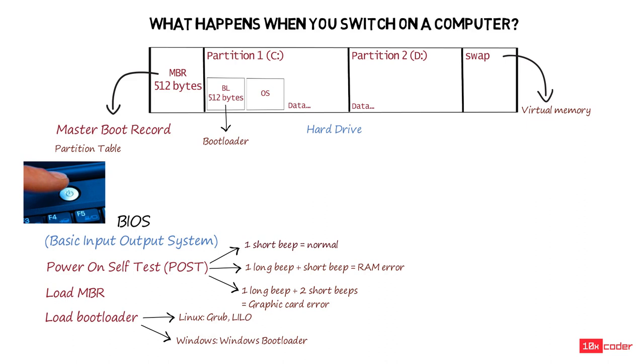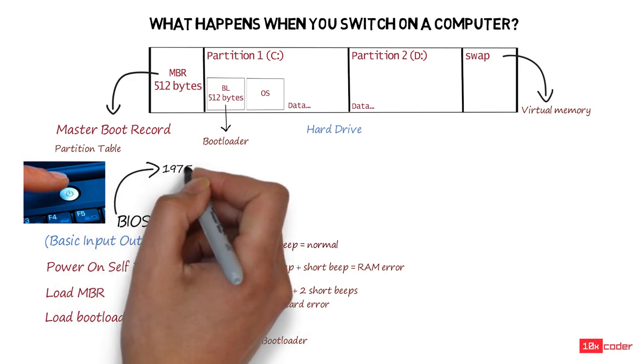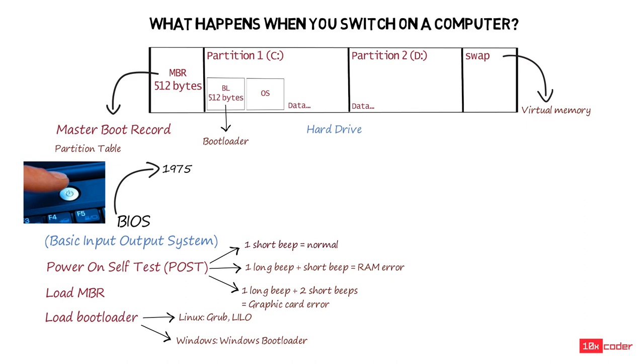If you're wondering why BIOS does not load the operating system on its own but delegates the same task to the bootloader, then the answer is BIOS is a pretty old piece of hardware. It was designed in 1975 and can only access 512 bytes of memory at a time. This is where the magic number of 512 bytes that puts the hard limit on the size of MBR and bootloader comes from.